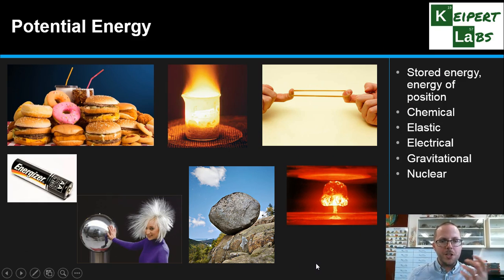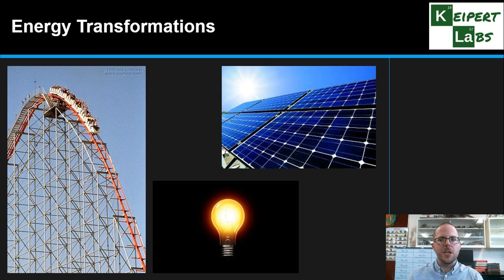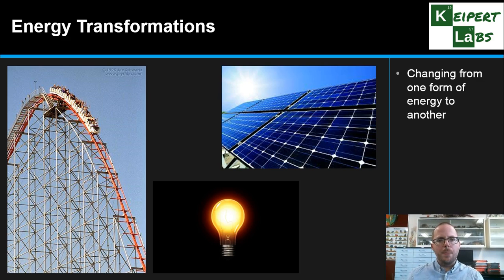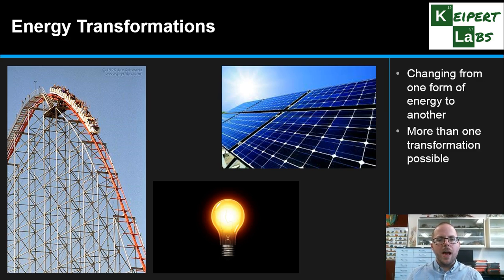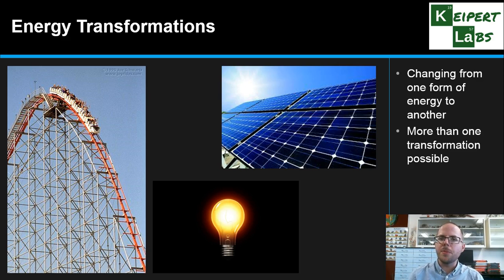So we have kinetic energy — energy of motion or movement — and we have stored energy, or potential energy, relating to an object's position. Now we also want to think about what happens when we can transform energy from one type to another, or one form to another. Here we've got three particular examples. In many everyday situations we have more than one possible transformation happening, and indeed we can have multiple transformations happening at once — like a light bulb, musical instruments, or collisions, which all involve multiple types of transformations.